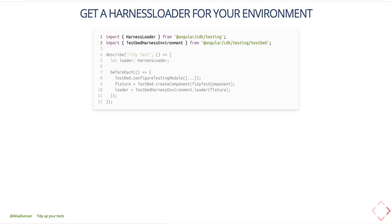In our examples we'll use Karma unit tests, so we don't have to worry about loading an environment loader for a specific library. The first thing we'll do is get the harness loader for the environment. You can set up both the harness loader and the TestbedHarnessEnvironment from the Angular CDK library. In the test fixture, you'll want to define a harness loader to use. In your TestBed setup, after you've created the component fixture, you'll pass the component fixture into the TestbedHarnessEnvironment loader, and now you have a harness loader you can use throughout your test.